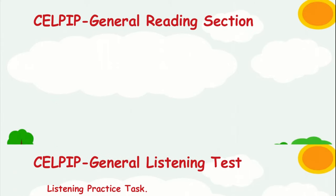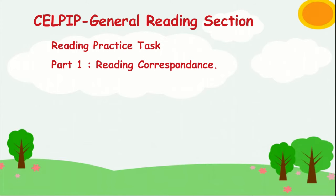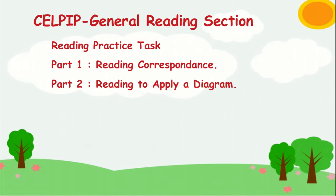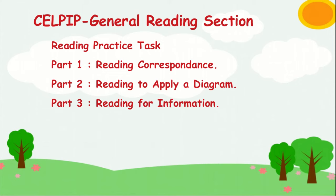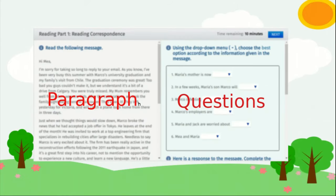The CELPIP General Reading section test is about 50 minutes. There are four parts in the reading test: Part 1, reading correspondence; Part 2, reading to apply a diagram; Part 3, reading for information; and Part 4, reading for viewpoints, plus one practice task. Reading correspondence will have some form of correspondence like a mail or email to read. The passage is on the left-hand side of the screen and answers on the right-hand side.